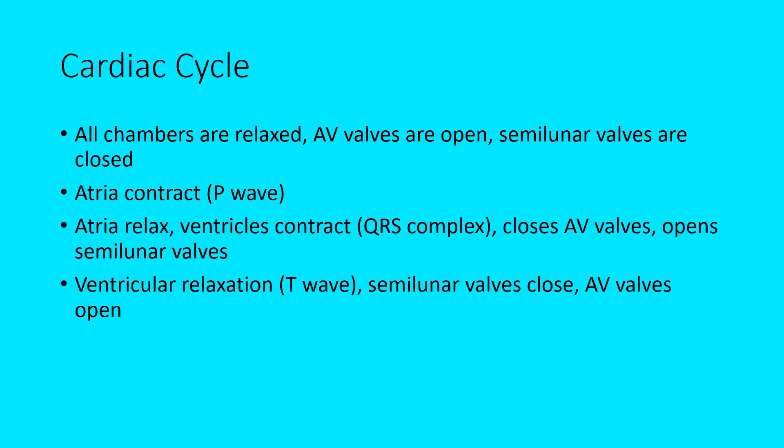We're going to look at an EKG graph in just a moment — there's a picture that puts all of this together. When the ventricles then relax, this is referred to as the T wave. At this point the semilunar valves close and the AV valves are going to open. The cardiac cycle then cycles back around through these steps in order, which is why we call it the cardiac cycle.